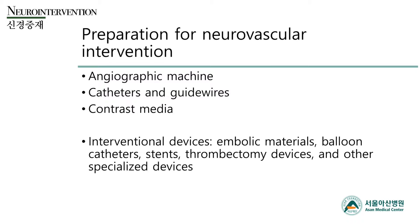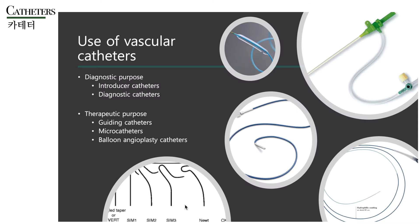As we have previously reviewed under the title of the basics of cerebral angiography, preparation for neurovascular intervention requires basically the same devices and equipment. On top of that, we need interventional devices such as embolic materials, balloon catheters, stents, thrombectomy devices, and other specialized devices. On top of basic angiography catheters, for endovascular treatment we need various diagnostic and therapeutic catheters, guiding catheters, microcatheters, and balloon angioplasty catheters, etc.